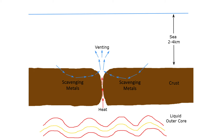This venting causes seawater to be drawn through the surrounding muds as it makes its way toward the intake of the vent. Along the way, this water dissolves minerals within these muds, becoming a mineral-rich brine. The metals dissolved within this brine are largely iron, but also lead, zinc, and silver, and other minerals such as sulfur.